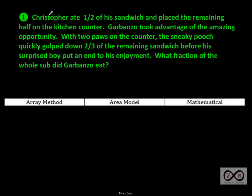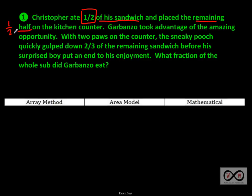Let's take a look at that first sentence: Christopher ate one half of his sandwich and placed the remaining half on the kitchen counter. One half is a math clue. We've got 'half' written in numerical form and 'half' written in word form — but it means the same thing. The remaining half was on the kitchen counter.